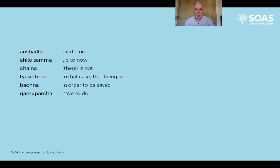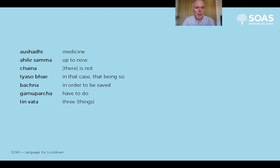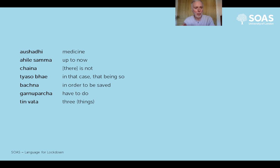'Garnuparcha' - 'garnu' is the verb meaning 'to do'. All Nepali verbs in the infinitive form, the dictionary form, end in 'nu'. 'Parcha' gives a sense of obligation or duty - 'have to do' or 'has to do', depending on who's in the sentence. 'Teen otta' - 'teen' is the number three, and when enumerating things with numbers, we have to distinguish between things and people. We add what we call a numeral classifier - 'otta' for things, so 'teen otta' means 'three things', three non-people things. We had 'yota' earlier, which is actually 'ek otta' - 'one thing'.